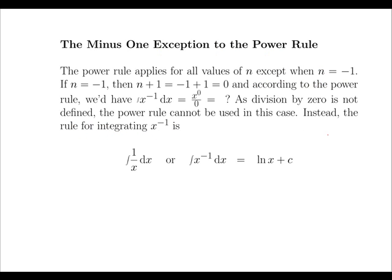The power rule applies for all values of n except when n equals minus 1. When n equals minus 1, we must use a different formula. In this case, the integral of 1 over x, or the integral of x to the minus 1, is given by ln x plus c.